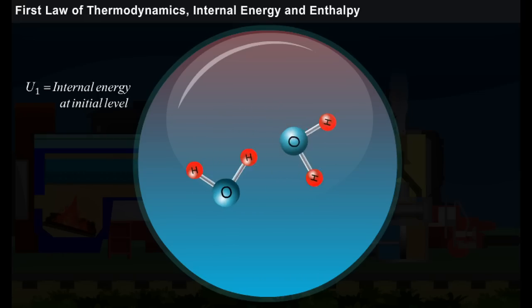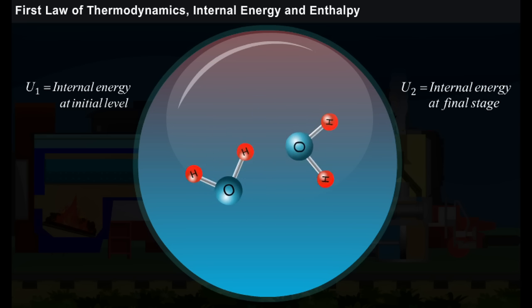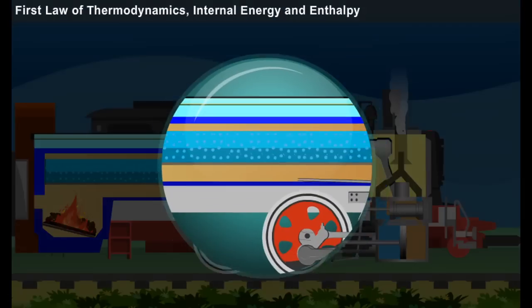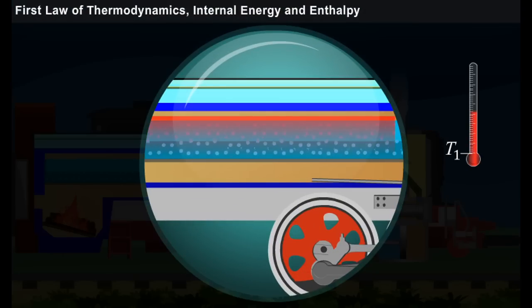During this process, the temperature has increased from T1 to T2. Let us denote the change in temperature from T1 to T2 as delta T. And the change in the internal energy from U1 to U2 is denoted as delta U.